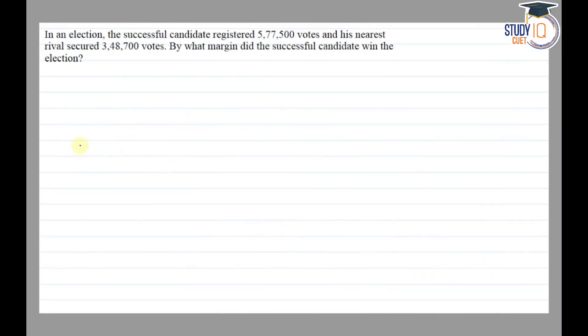Hello everyone, this question appears in Class 6th NCERT chapter of knowing your number. This is the third question of its exercise 1.2. So the question says that in an election, the successful candidate registered 5,77,500 votes and his nearest rival